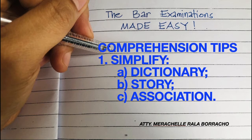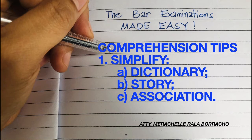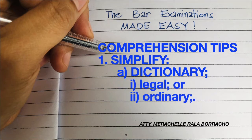It's a continuation of our comprehension tips. One way to have better comprehension is to simplify — simplify the things you are reading, the laws, principles, and concepts, so that you will have better understanding. There are ways to simplify: by using a dictionary, by creating a story, and through association. But today, we will focus on the use of the dictionary.